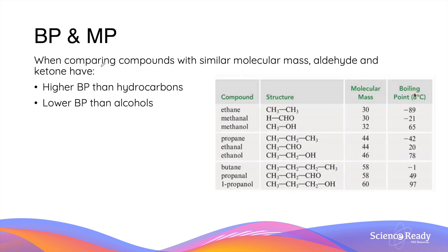When we compare aldehyde and ketone molecules with hydrocarbons and alcohols of similar molecular mass, the following observations are made. Aldehydes and ketones have higher boiling points than hydrocarbons, as hydrocarbons are non-polar molecules attracted together only by dispersion forces. However, aldehydes and ketones have lower boiling points than alcohols because alcohols can form hydrogen bonds due to the presence of a hydrogen atom bonded to an oxygen atom.